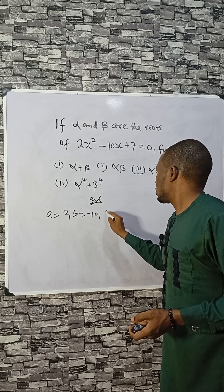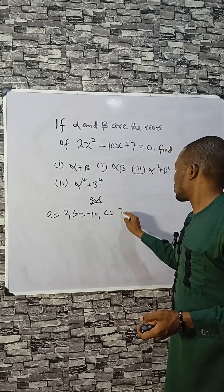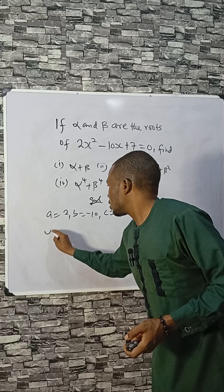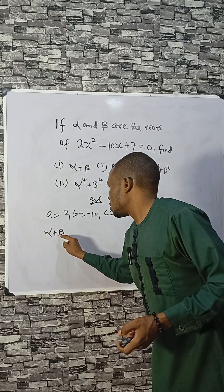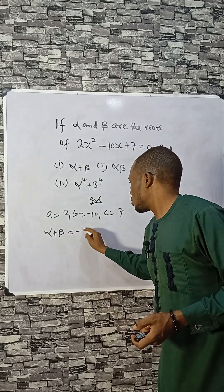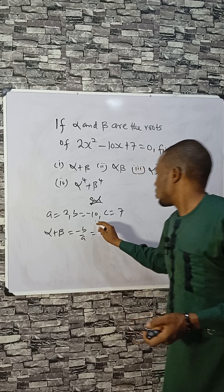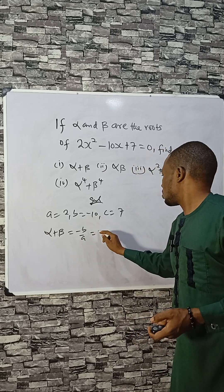Alpha plus beta is the sum of roots, which is given to be minus B over A. Minus B here, so B is minus 10 divided by A, which is 2. That gives us 10 over 2, which is 5.